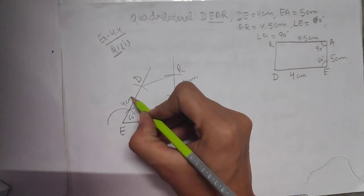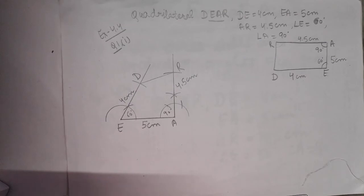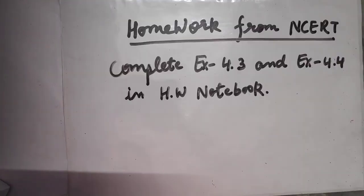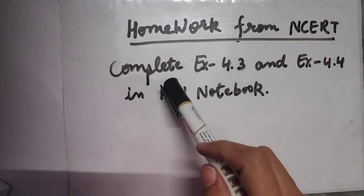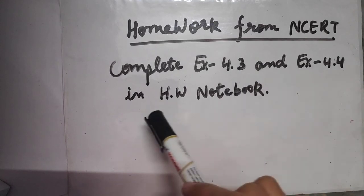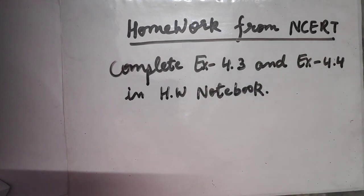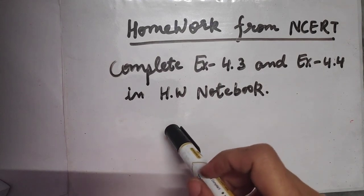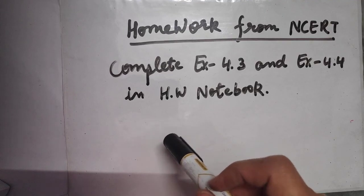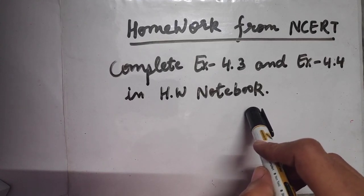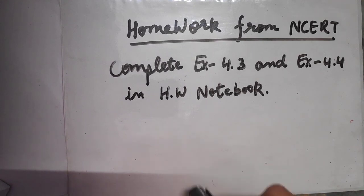You can write the measurements — this is 4 cm. I hope you have understood how to construct a quadrilateral when three sides and two included angles are known. For homework, complete exercise 4.3 and exercise 4.4 in your notebooks. Exercise 4.3 is based on constructing a quadrilateral with two adjacent sides and three angles, and exercise 4.4 is based on three sides and two included angles. If you have any doubts they can be resolved in online classes. That's all for today, thank you.